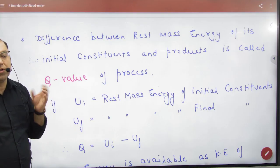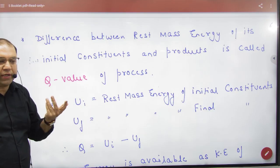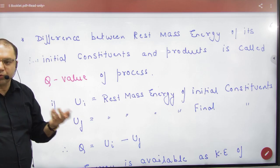The product's energy is less. So if the energy of reactants is 10 MeV and the product's energy is only 8 MeV, where did the 2 MeV go?